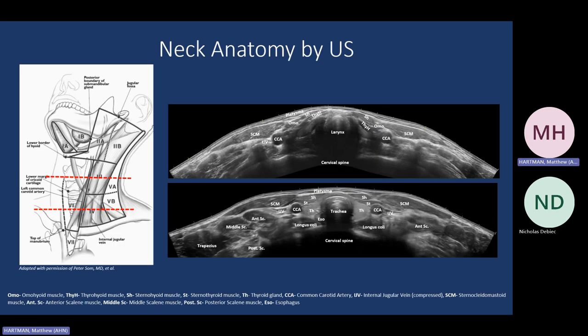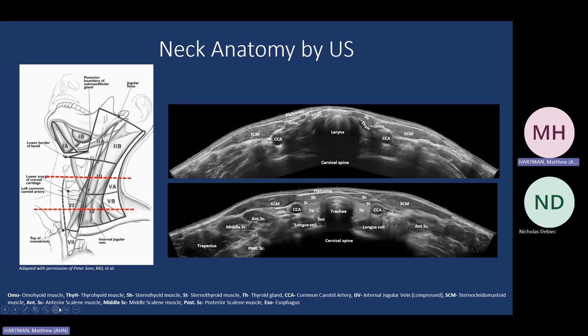So let's start with some ultrasound anatomy. These are great pictures of the normal thyroid and the neck. We'll be talking about lymph nodes later, knowing the lymph node chains, what demarcates the different levels, the blood vessels, the muscles. This is something that you can study on your own.